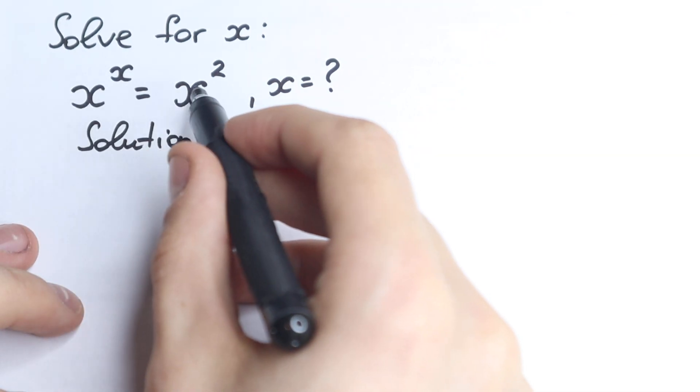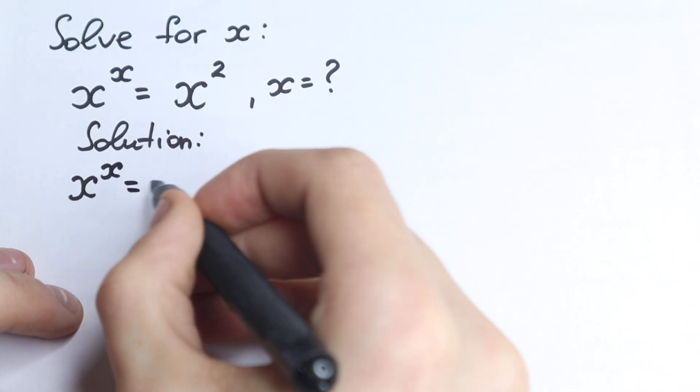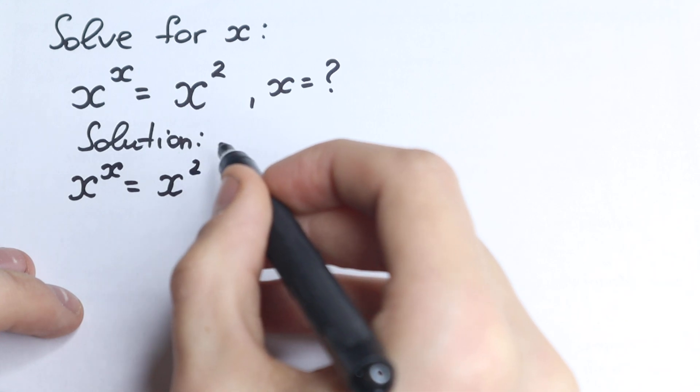Okay, this is solution. So we have x to the power x equal to x squared, let's rewrite it, so x to the power x equal to x squared. So this looks like not a hard question.